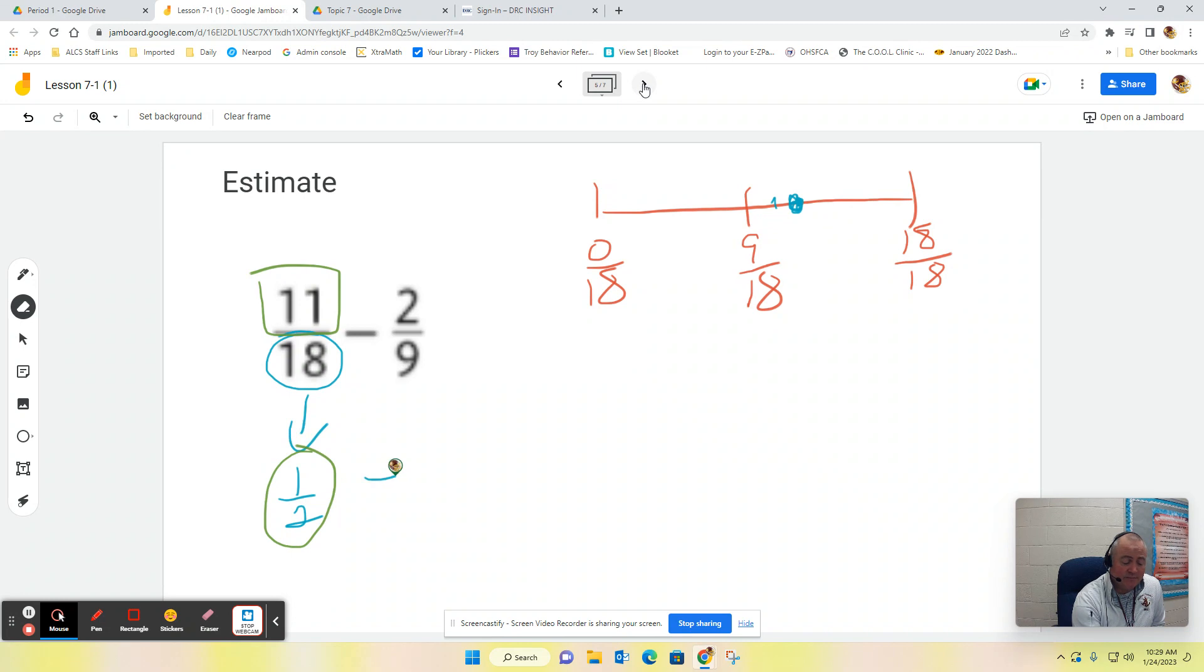Now let's do a subtraction problem here. So now we've got 2/9. This would be 0/9. This would be 9/9. And then this is kind of the funky one.